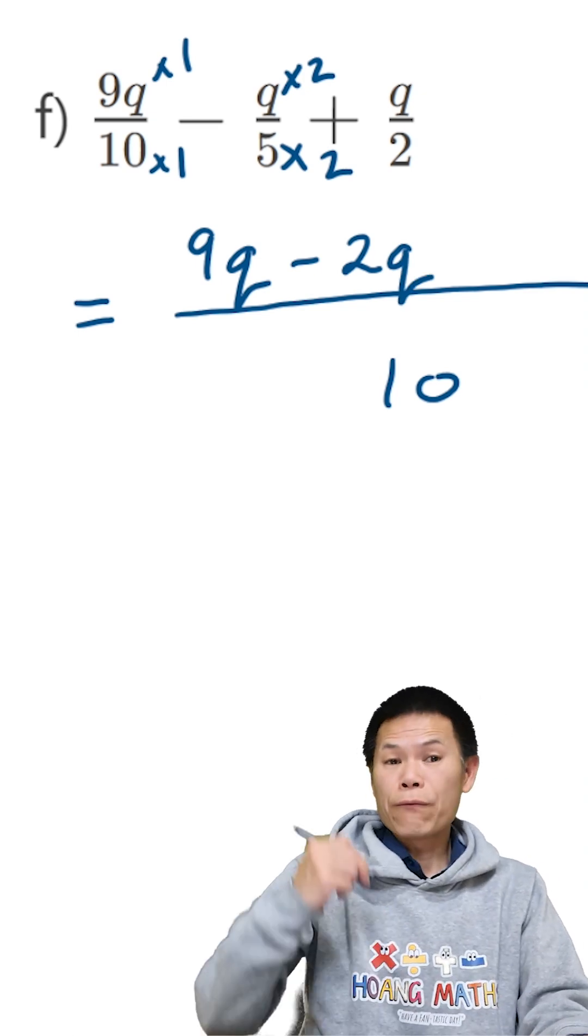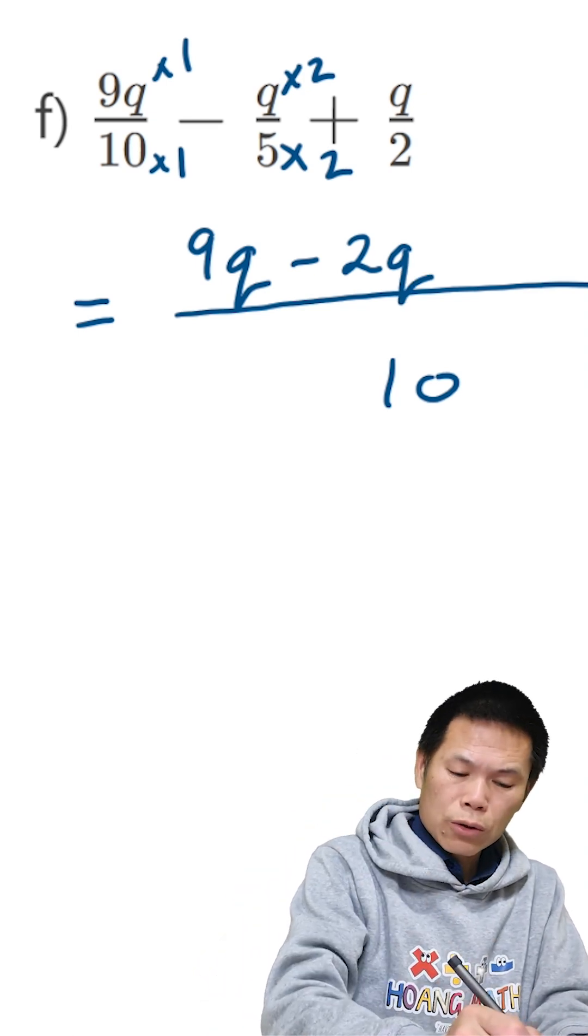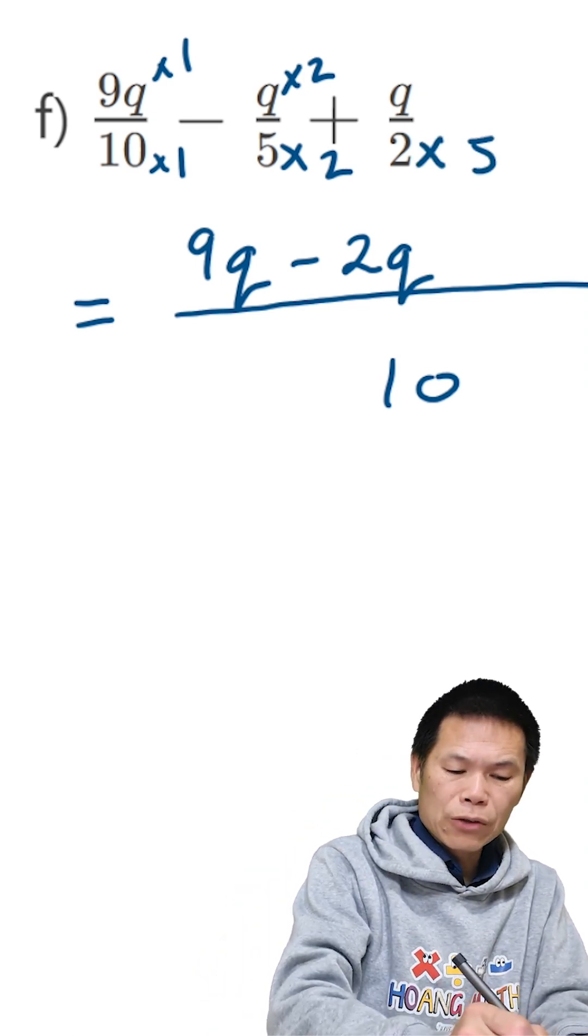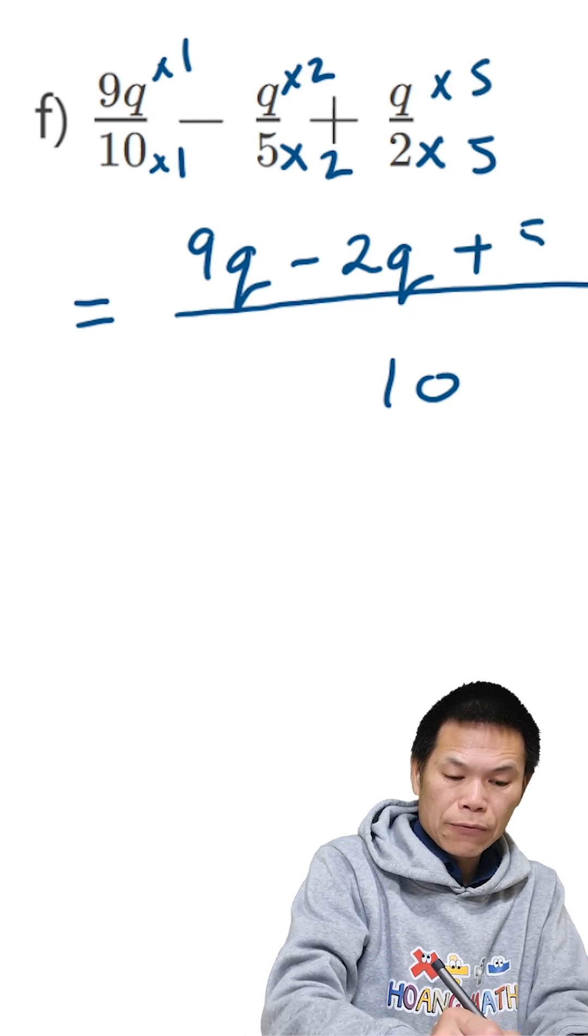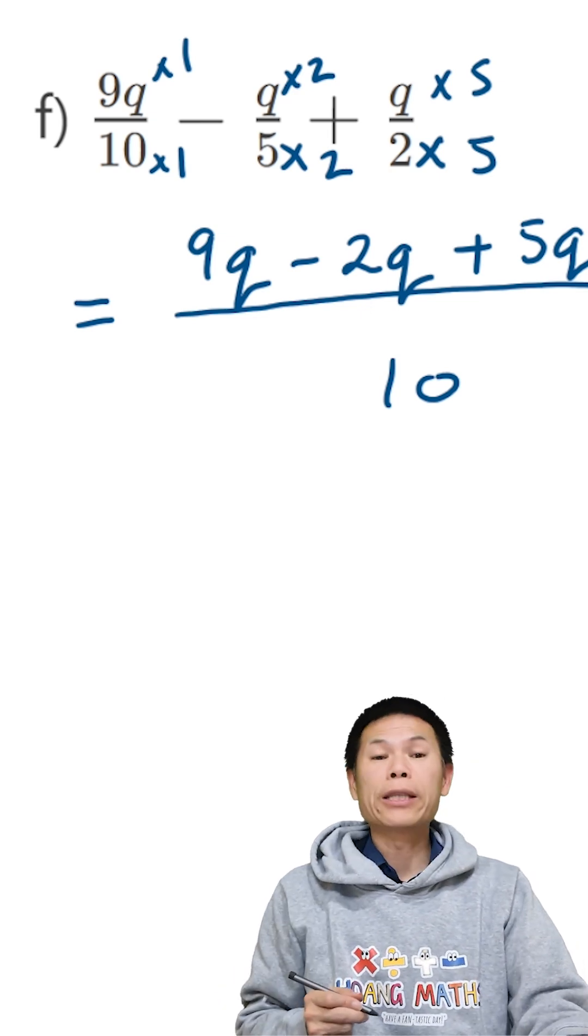And for 2 to 10, I times by 5. So this times by 5. So we add 5 times q is 5q. There you go.